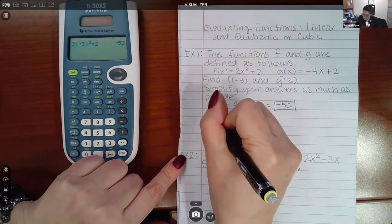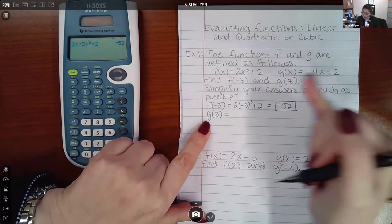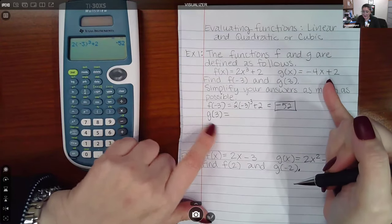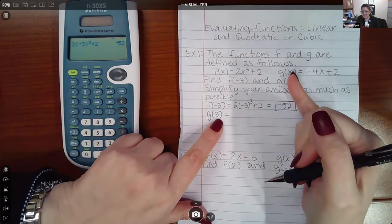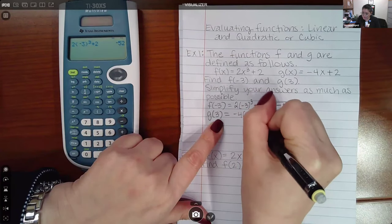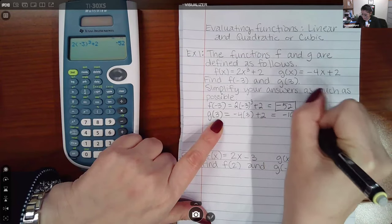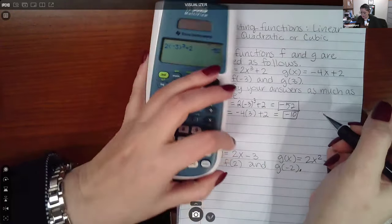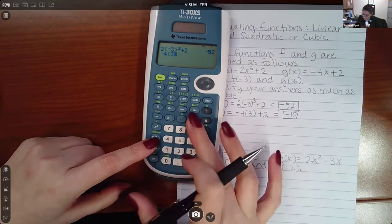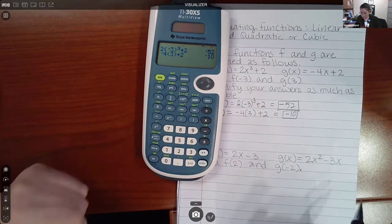Now if I want to calculate what g of 3 is, that means I need to be looking at the g function, so this formula, and I need to be replacing the x with a 3 now. So this would become negative 4 parentheses 3 plus 2. You can type that in your calculator if you cannot do the computation in your head, or if you just want to double check your computation.